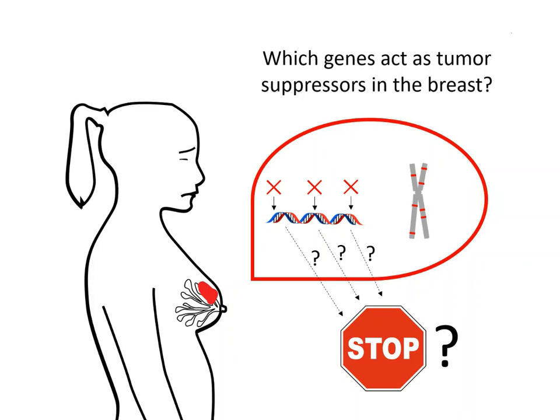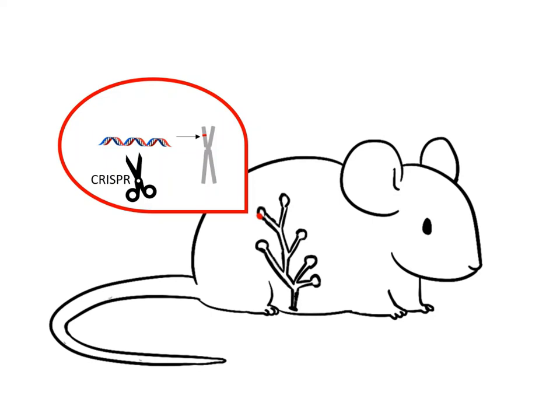To do this, we disrupt genes we think may be involved in human breast cancer in a mouse model using CRISPR-Cas9 gene editing, which acts as molecular scissors that cut DNA, disrupting the targeted gene.